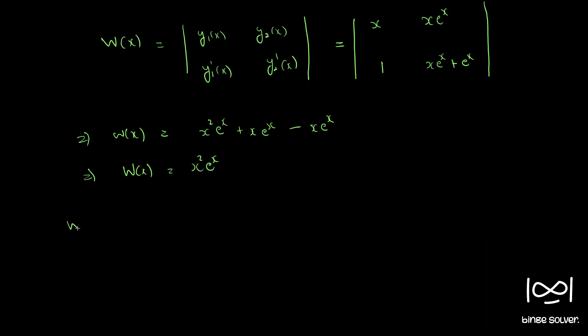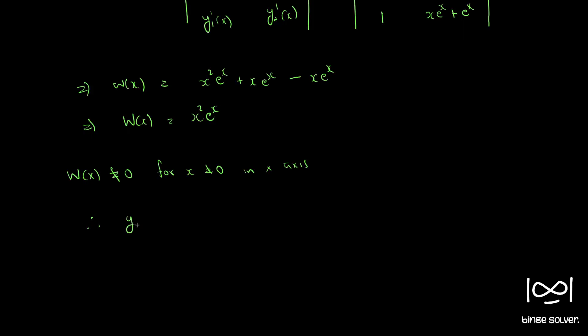Now we know that W(x) is not equal to 0 for all x in the interval 0 to infinity. For x not equal to 0, we can just say x not equal to 0, and since we have W(x) not equal to 0 for x not equal to 0 on the x axis, therefore, y1(x) and y2(x) are linearly independent.